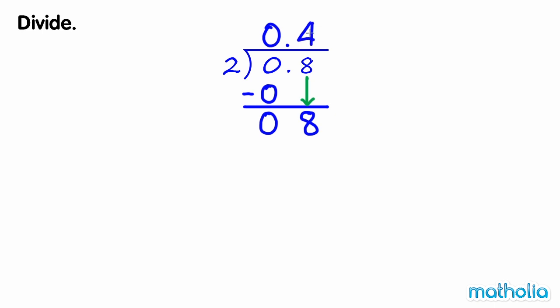Multiply. 2 times 4 tenths equals 8 tenths. Subtract. 8 tenths minus 8 tenths equals 0. So 0.8 divide 2 equals 0.4.